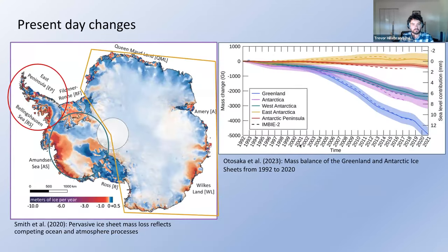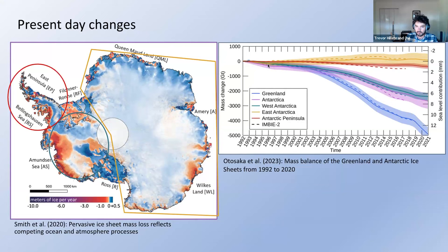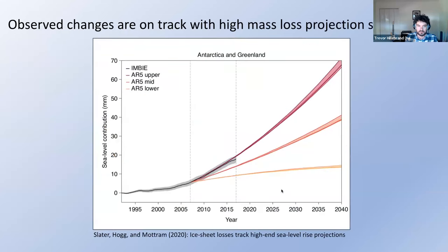Looking at a map of present-day changes based on satellite observations of Antarctica, we see a large signal of thinning in West Antarctica, especially in the Amundsen Sea sector, where warm ocean waters are reaching the grounding line and under the ice shelves, causing dynamic and rapid drawdown of the West Antarctic ice sheet. Observations of mass change and equivalent sea level rise over the past three decades show that West Antarctica's contribution essentially explains the entire mass loss from Antarctica, and these observed changes are on track with the highest mass loss projections from the AR5 IPCC report.